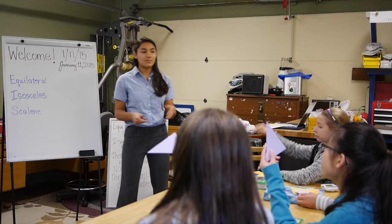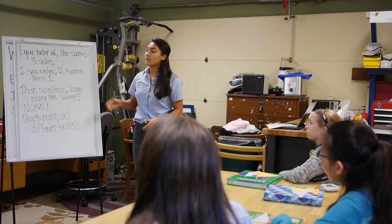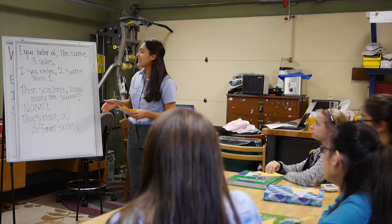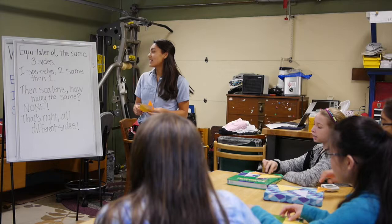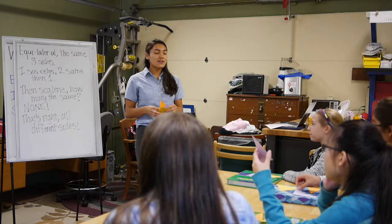So to reinforce this we will go over a quick cheer so we can all understand which triangles are which and remember them. As we go through each part I want you to hold up the triangle that we are talking about. So is everyone ready? Have your triangles ready? All right. Begin. Equilateral — the same three sides. Isosceles — two same then one. Then scalene — how many the same? None. That's right, all different sides. Nice job.